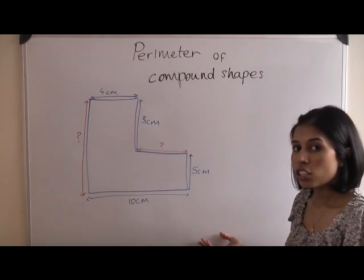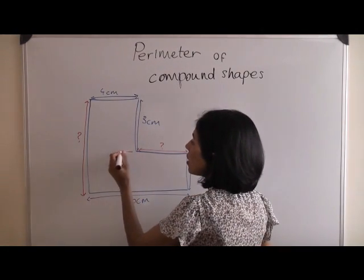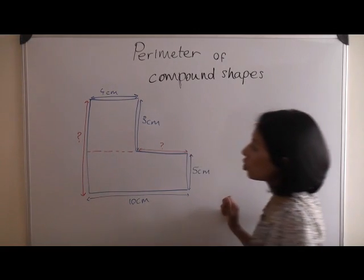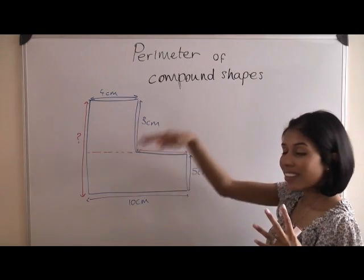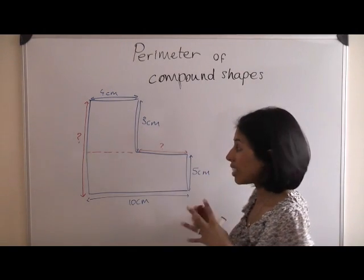The first thing you need to do is split the shape into two rectangles. This will help you visualize the parallel lines to help you identify the missing lengths.